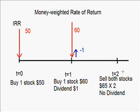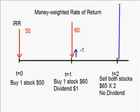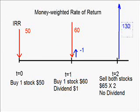In the last year, you sold both of the stocks for $65 each, and of course the money goes to your client as well. So as a result, you have another cash outflow. This outflow is 2 times $65, which is $130.